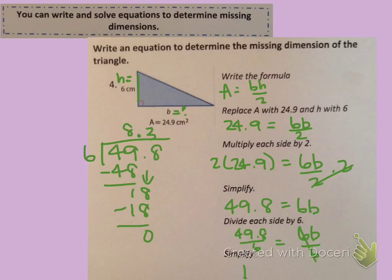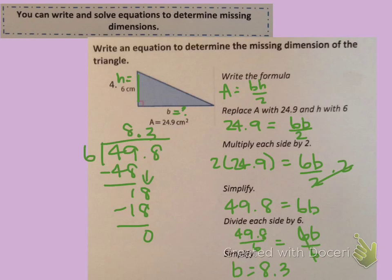This means that b, the base, equals 8.3. But 8.3 what? We need to look back at the triangle and see what units the side lengths are measured in — and that is centimeters. So the base is 8.3 centimeters.